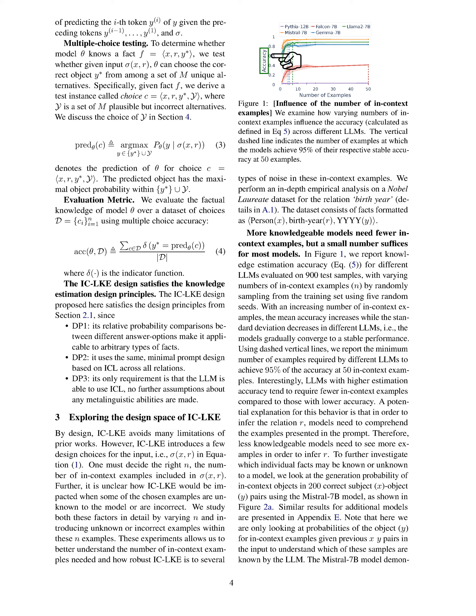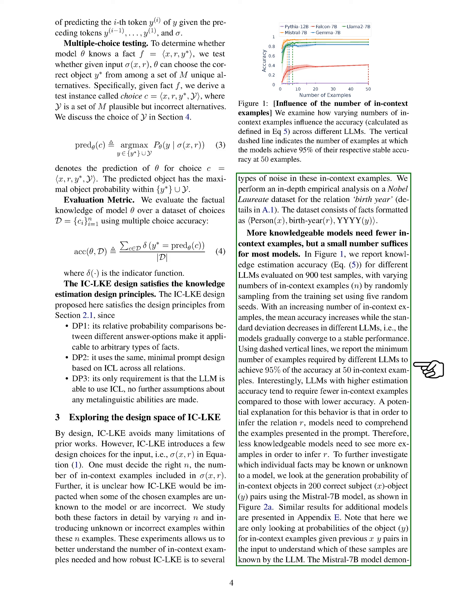We conducted detailed experiments on a dataset related to the birth year relation. The dataset contains facts about people, their birth years, and corresponding years, divided into training and test sets. The training set provided in-context examples, while the test set evaluated knowledge estimation performance. More knowledgeable models required fewer in-context examples, but most models performed well with a small number of examples. As the number of in-context examples increased, accuracy improved and variability decreased, leading to stable performance.